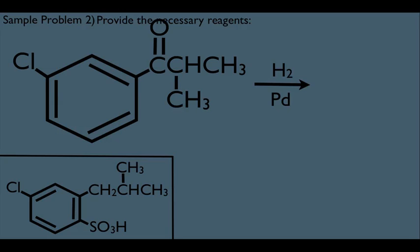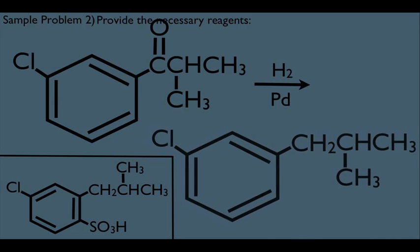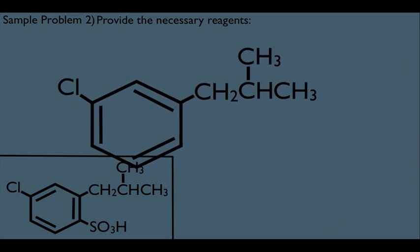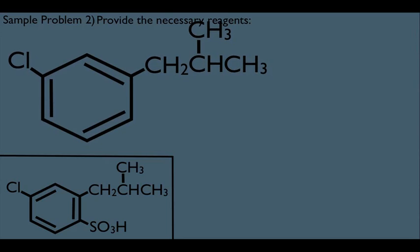Now is the time for me to reduce that C double bond O. And if you remember, these are the necessary reagents, H2PD or H2PDC. That reduces the C double bond O into CH2. And let's do this here. Let's move our methyl up so it looks exactly like what we're going after. And we're ready now for the final reaction here.